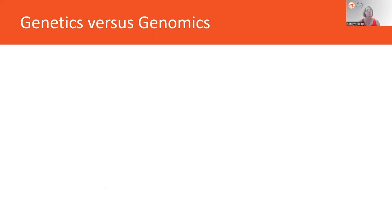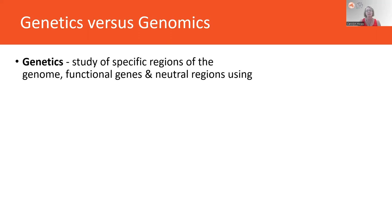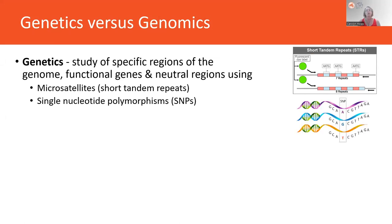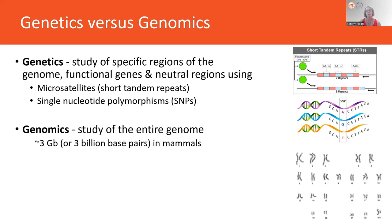A quick summary of what Paul Sonix presented on molecular marker types: genetics refers to the study of specific regions of the genome — either functional or neutral genes. You can use microsatellites, also known as short tandem repeats, or single nucleotide polymorphisms (SNPs), which are single base pairs at different positions along the genome. Genomics, however, refers to the study of the entire genome. Geneticists tend to use the words genetics and genomics interchangeably, but they have two different meanings.